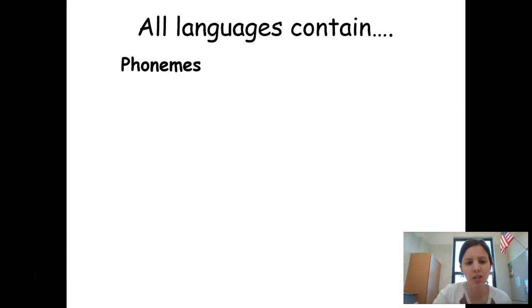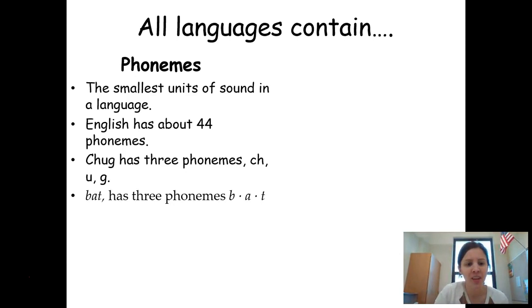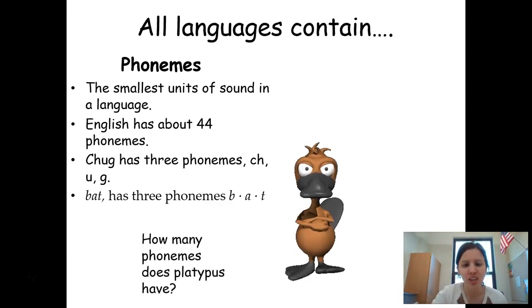So now for some vocab for Module 36. All languages contain these things called phonemes. And this is an important word to make sure that you know. But a phoneme is the smallest unit of sound in a language. And so English has about 44 of them. But for example, chug has three phonemes: the ch, uh, and the g sound. So that would be three. If you take the word bat, that has three: B, A, T, so it's almost like just reminding me of how I learned to read, my dad making me sound everything out. But to check yourselves to make sure that you can identify these phonemes, take the word platypus and then see if you can figure out how many phonemes are in platypus. Maybe even pause the video and write out your last name and see how many phonemes your last name has.